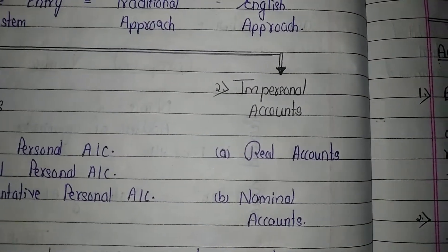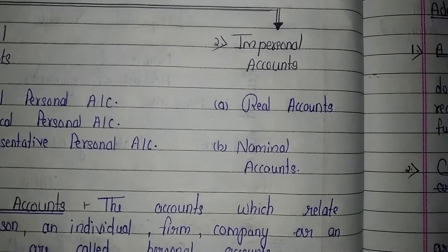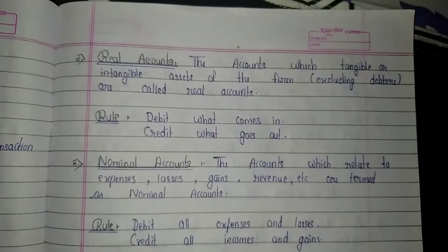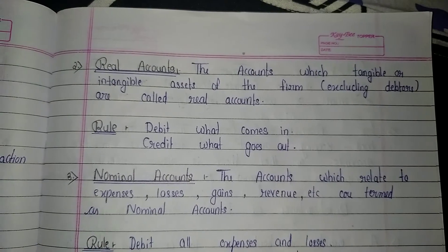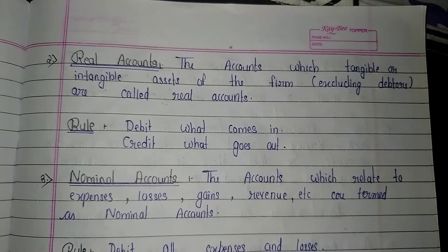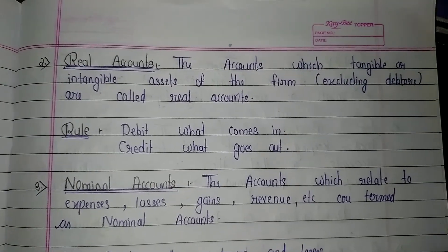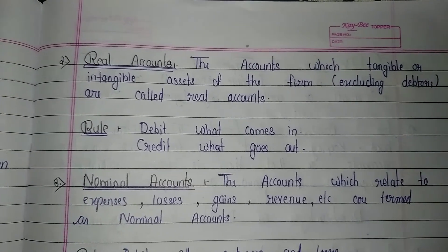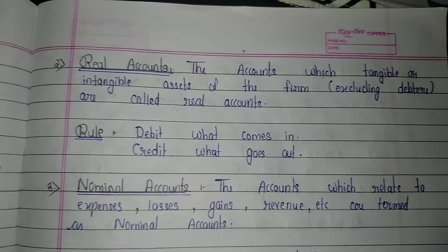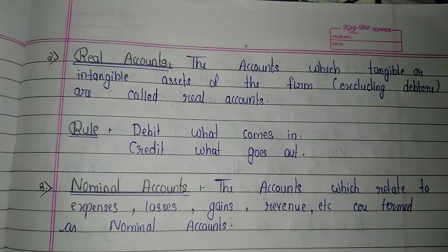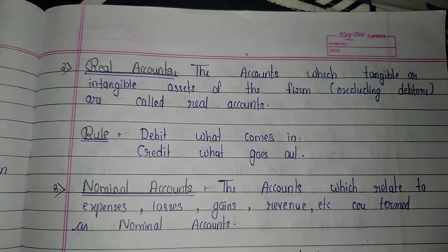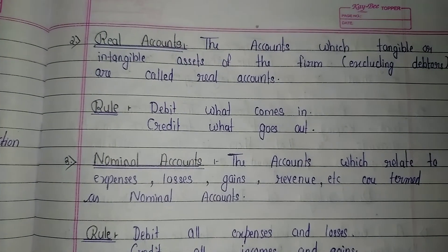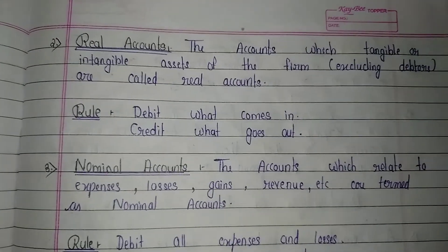Impersonal accounts also have two types. The first type is real accounts, which are the tangible and intangible assets of the firm, excluding debtors. The rule for real accounts is: debit what comes in and credit what goes out.